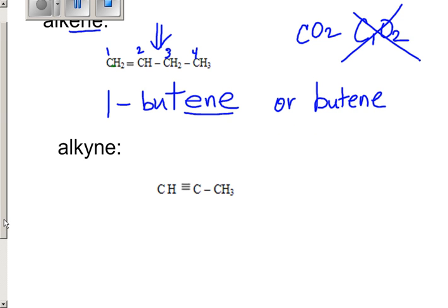Moving on to the alkyne. You see the suffix is y-n-e. That means there is a triple bond somewhere within the structure. You start as you always do: count the longest continuous chain of carbons. I see a triple bond here. So I know I have to start counting from left to right because the triple bond is closer to the left side.